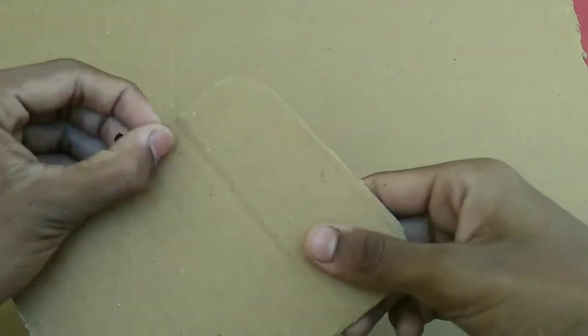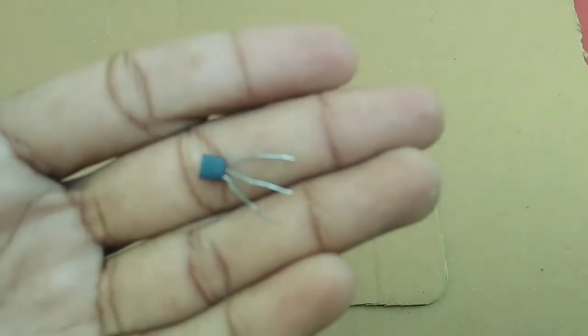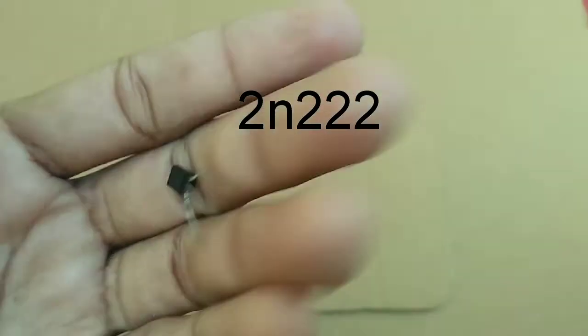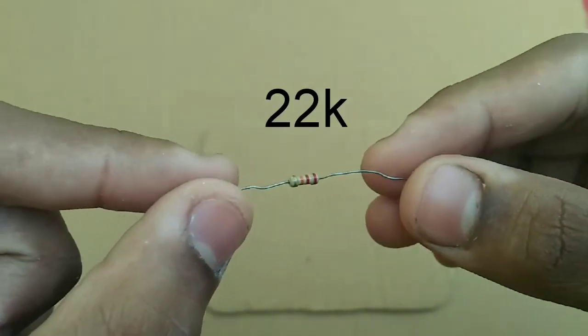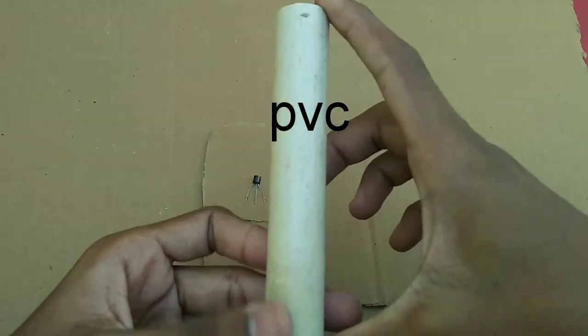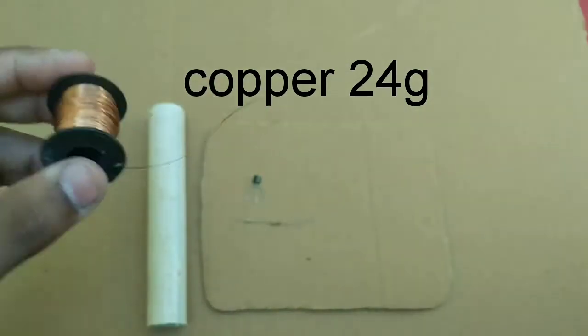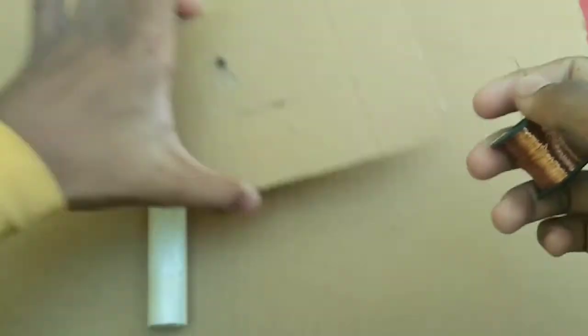Hello friends, welcome to my channel. For this project, we'll need: cardboard sheet, 2N2222 transistor, 22k resistor, PVC pipe 10 centimeters long, and 24 gauge copper wire.